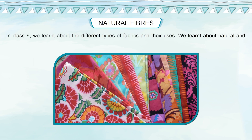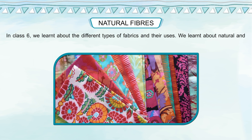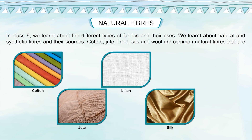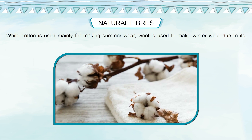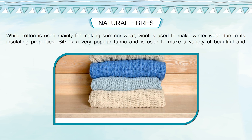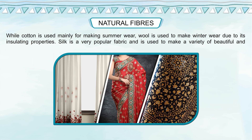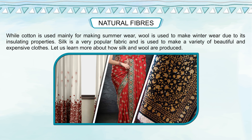In Class 6, we learned about different types of fabrics and their uses. We learned about natural and synthetic fibers and their sources. Cotton, jute, linen, silk and wool are common natural fibers used to make fabrics. While cotton is used mainly for making summer wear, wool is used to make winter wear due to its insulating properties. Silk is a very popular fabric used to make a variety of beautiful and expensive clothes. Let us learn more about how silk and wool are produced.